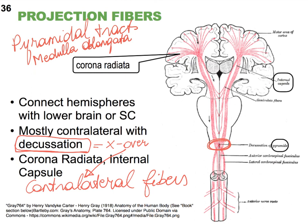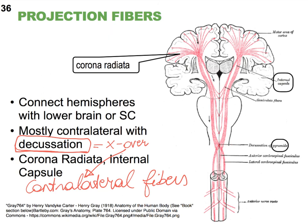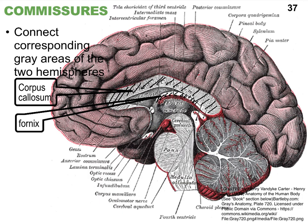The pyramidal tracts cross over at the medulla oblongata, and they are tracts that very much control our skeletal muscles. This also gives a nice introduction to what the spinal cord looks like — it has a little butterfly pattern on the inside, and there are actually two halves — hemispheres — of the spinal cord.